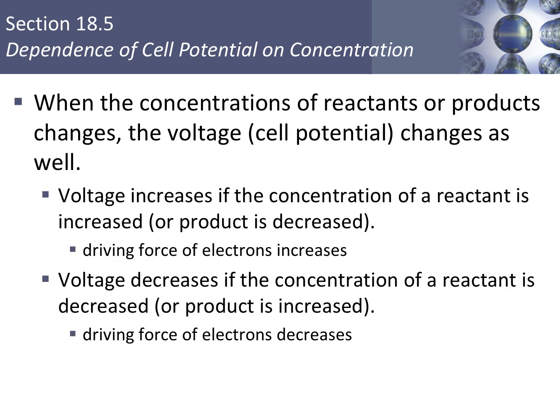In section 5, we're going to look at how concentration affects cell potential. So far, our concentrations have been standard 1 molar. But if we increase the concentration of a reactant or decrease the concentration of a product, we're going to see our voltage increase — an increase in the driving force of our electrons. And if we decrease the concentration of a reactant or increase the concentration of a product, our voltage is going to decrease.